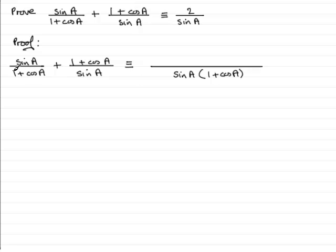Now, what do I need to multiply 1 plus cos A to get this denominator here? It would be sin A. So I'd need to times top and bottom of this fraction by sin A to turn it to an equivalent fraction with this denominator. So that's just going to be sin A times another sin A, or sin squared A for short.